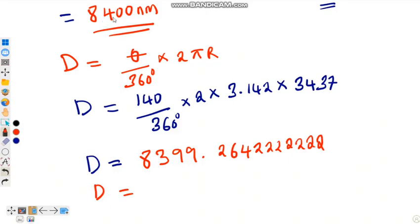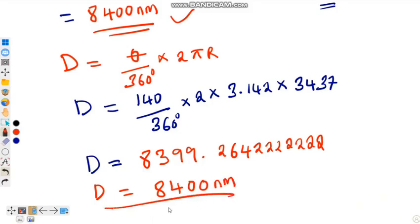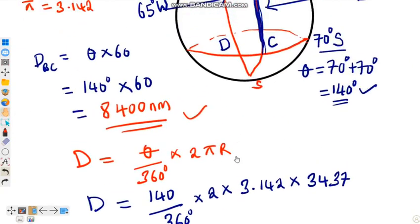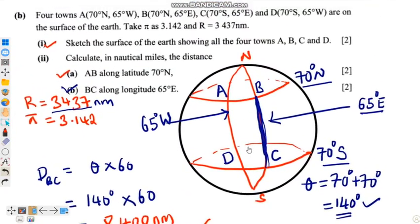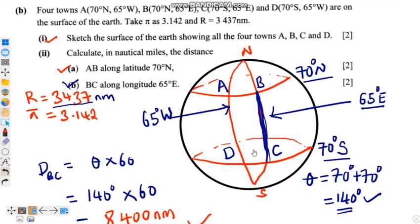Rounding to the appropriate significant figures gives 8400 nautical miles — confirming the answers are the same using both methods. That brings us to the end of this presentation. Thank you for viewing this content.